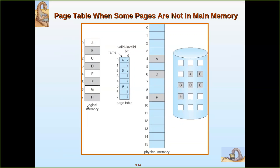The logical address space is the user address space where the whole thing is available, but it is not present in main memory. Page 2 is placed in frame 6 and is available. Pages 3 and 4 are not there. Page 5 is present and placed at frame 9, so its valid-invalid bit is set to V, indicating it is present in main memory.